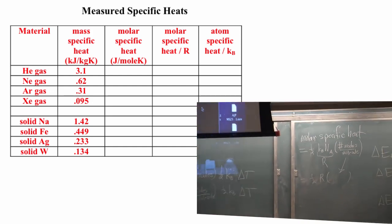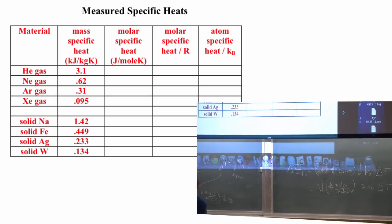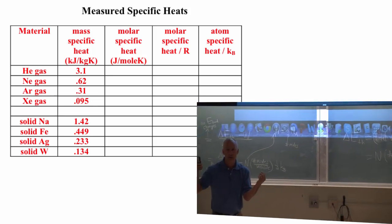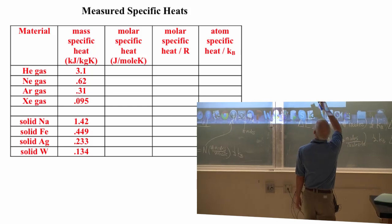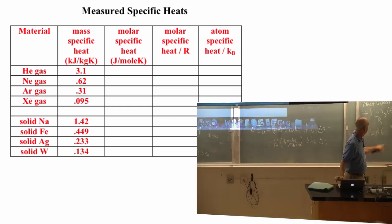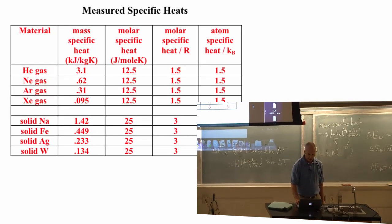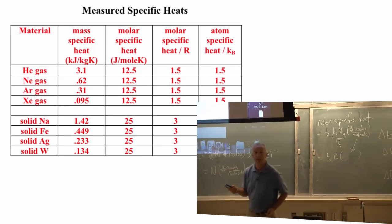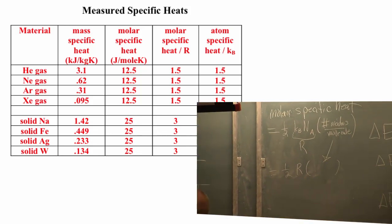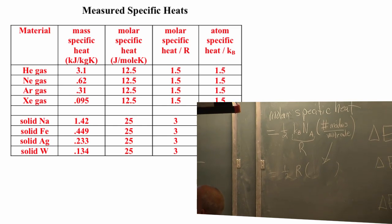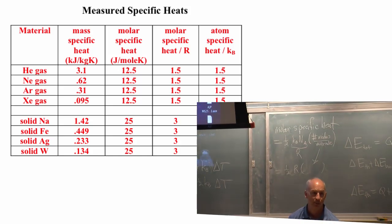If I divide the molar specific heat by R, then I just have one-half times the number of modes per molecule. Well, helium gas, helium is monatomic, so a molecule is just an atom. How many modes does that helium atom have? Three. So the molar specific heat per R? That's three divided by two. I get one-and-a-half. The molar specific heat divided by R for helium gas, neon gas, argon gas, xenon gas, all the same number.